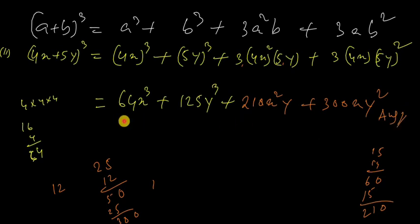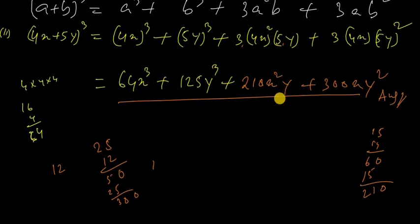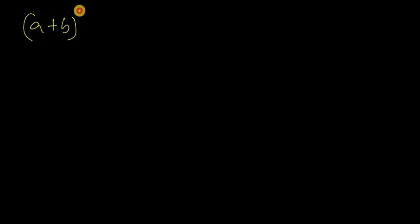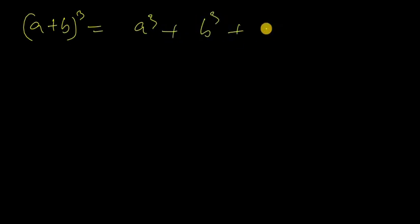This is the answer. The formula we used is: A plus B whole cube equals A cube plus B cube plus 3 A squared B plus 3 A B squared.